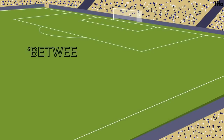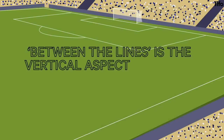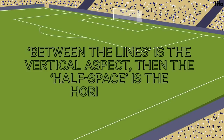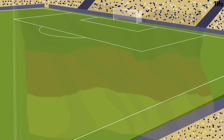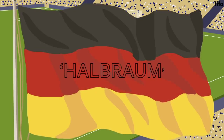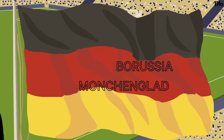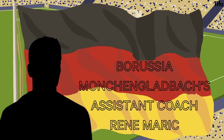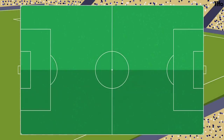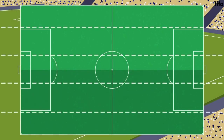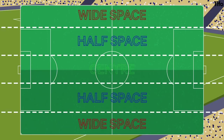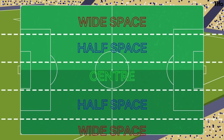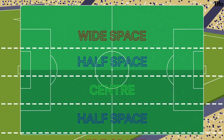So, if playing between the lines is the vertical aspect, then the half-space is the horizontal. This term comes from the German Halbraum, and it was probably first popularised by Borussia Mönchengladbach's assistant coach, René Maric, when he was writing for an influential tactics site. If a pitch is divided into five columns horizontally, the half-spaces sit between the wide and the central spaces. There are two, and while it's easy to think of them as fixed in width, they can shift in size depending on where the opposition defenders are.